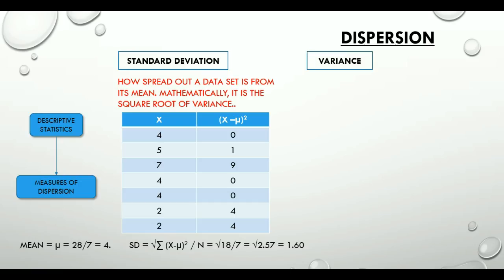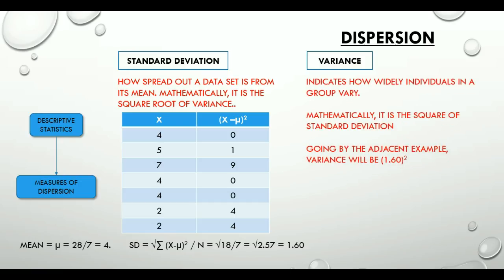Now, the last measure of dispersion is variance. It indicates how widely individuals in a group vary. Mathematically, it is the square of standard deviation. Going by the adjacent example, the variance will be the square of 1.60.